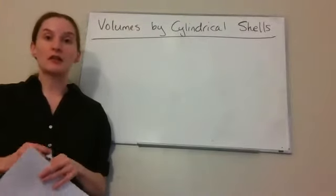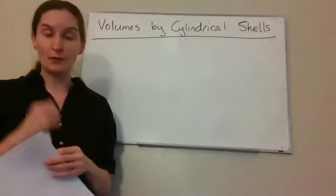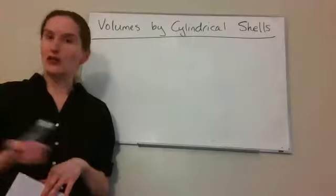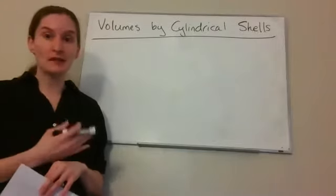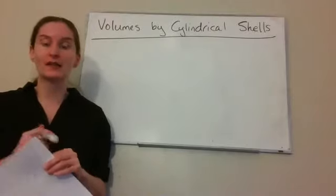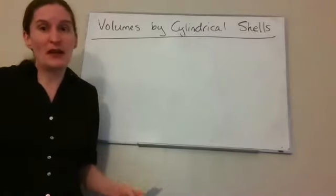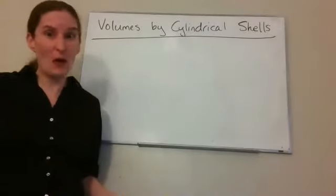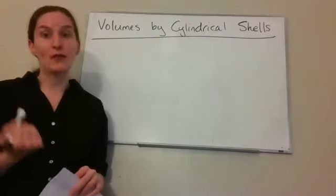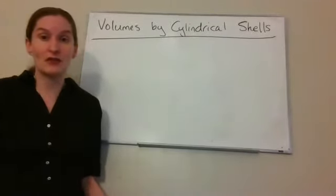In this video we're going to learn another method for calculating volumes when we rotate a region around an axis. We learned about the washer and disk method last time, where we slice our object and then look at the area of the cross-sectional face. That works most of the time, and you can do either of these methods all the time. Sometimes the problems are very difficult to do with one method versus the other, and that's why we have two of them.